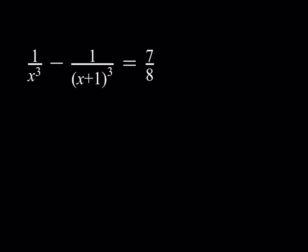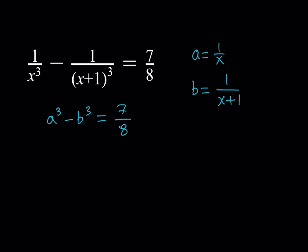I'm going to make some substitutions here. Our goal is to go from one variable to two variables. I'm going to call 1 over x as a, and b is going to be 1 over (x plus 1). What is so good about doing this is that I'm getting a difference of two cubes. So this results in the equation a cubed minus b cubed is equal to 7 over 8.